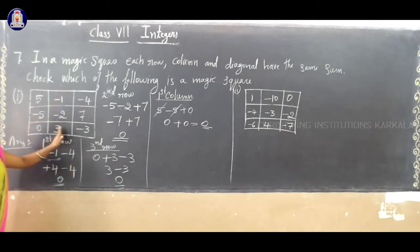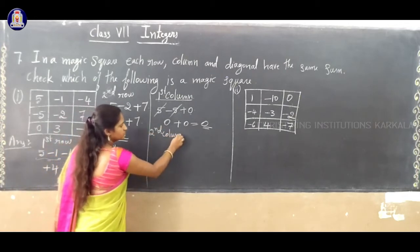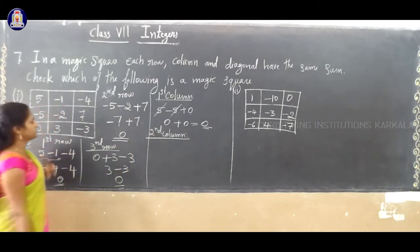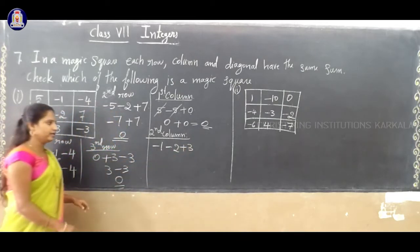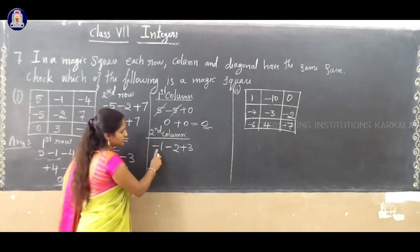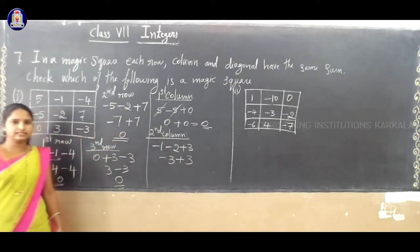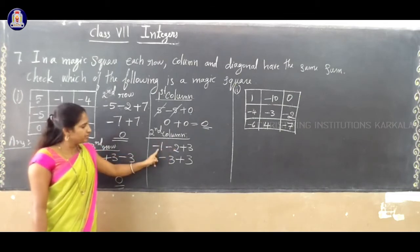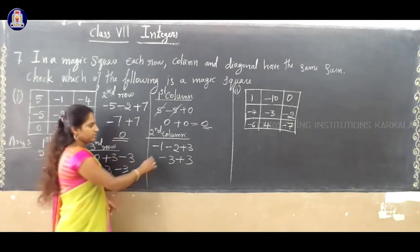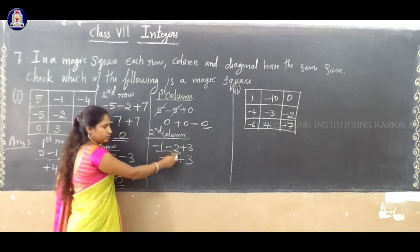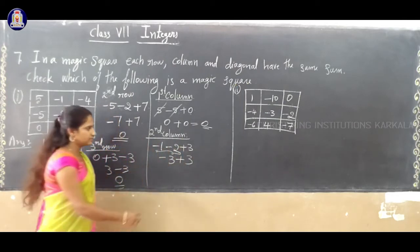Now check the second column: minus 1, minus 2, plus 3. Minus 1 minus 2 — same sign, addition — gives minus 3. Then minus 3 plus 3 — different signs, subtraction — 3 minus 3 is 0. So, the second column sum is 0.